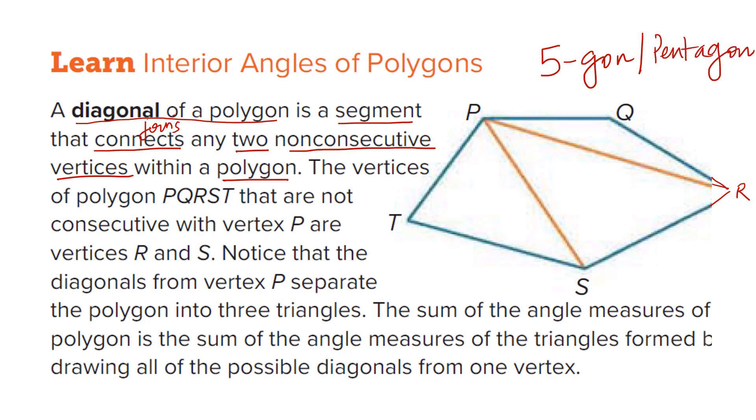Now this pentagon, how do we define the diagonal? So look at the vertices P, Q, R, S, T. There are 5 vertices. Now these 5 vertices if you take the non-consecutive. Non-consecutive means which are not one after the other. So if I am taking P, I cannot take Q, I cannot take T, I have to take R and S.